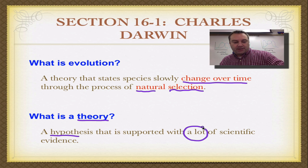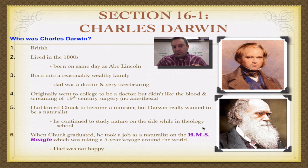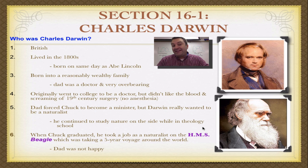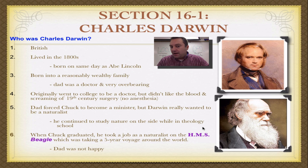So let's learn about Chuck. Charles Darwin was a British gentleman who was born in the early 1800s. In fact, he was born on the very exact same day as President Abraham Lincoln. Charles was born to a reasonably wealthy family. His grandfather was a physician, his dad was a physician and actually a pretty good investor. So he really comes from kind of an upper-class, but not quite royalty, part of England.